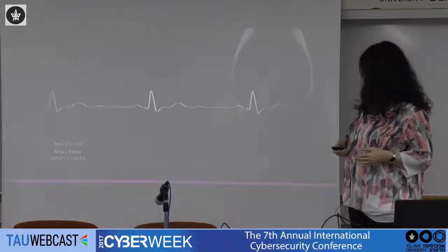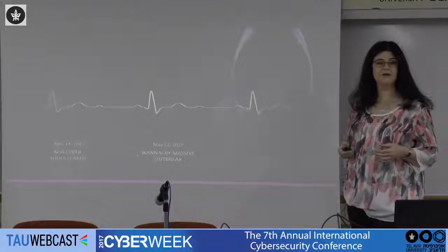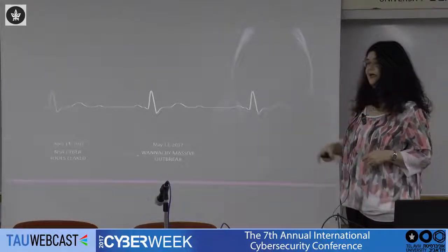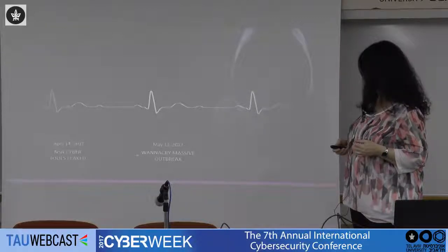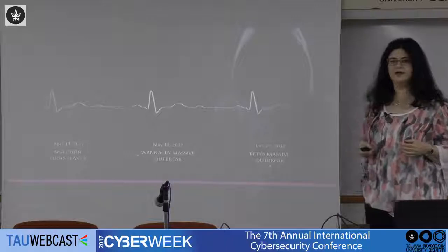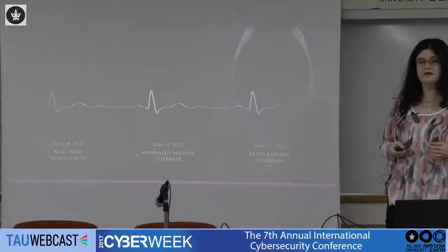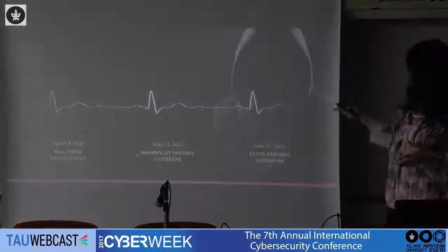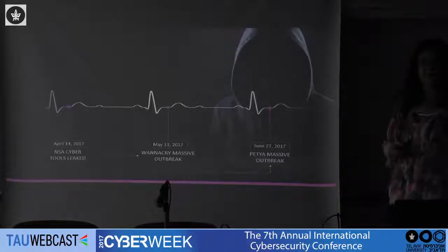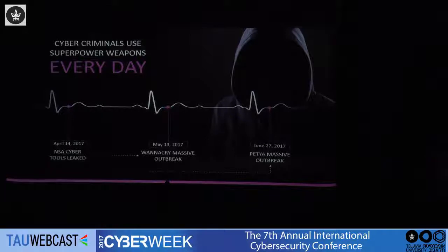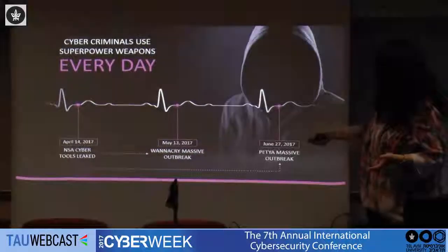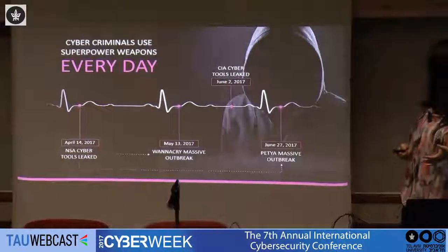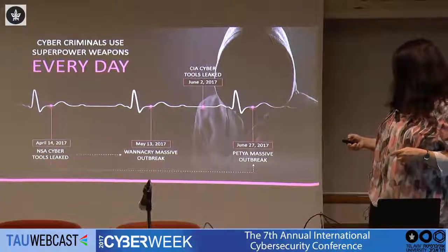A month later, we saw the WannaCry massive outbreak. WannaCry was so massive because it was using the NSA superpower crime tools. Two days ago, we saw another massive outbreak — Petya — also using the same tools from the NSA and other methods as well. Earlier this month, the CIA cyber tools were also leaked. So it's only a matter of time before we see an attack using those. We don't know when, but it will be very powerful.